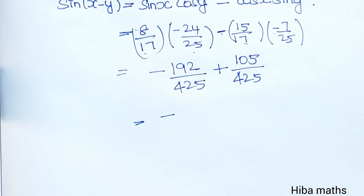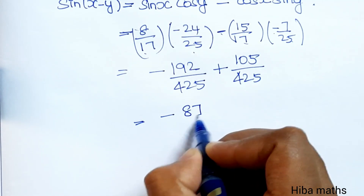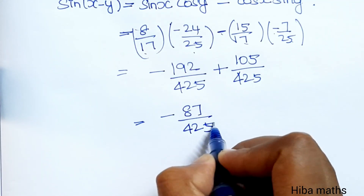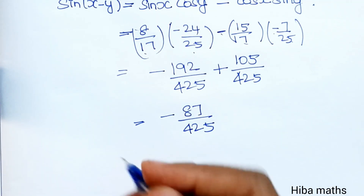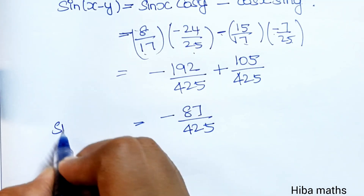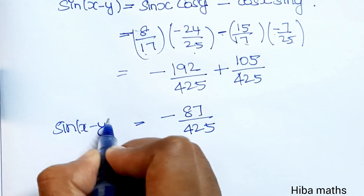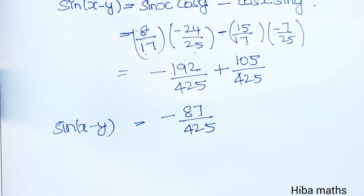The answer is minus 87 by 425. So sin(x - y) equals minus 87 by 425. This is the final answer. Thank you so much for watching.